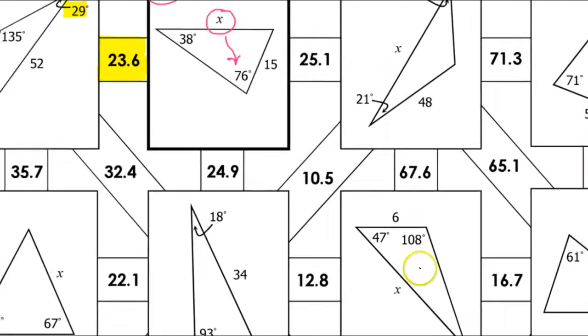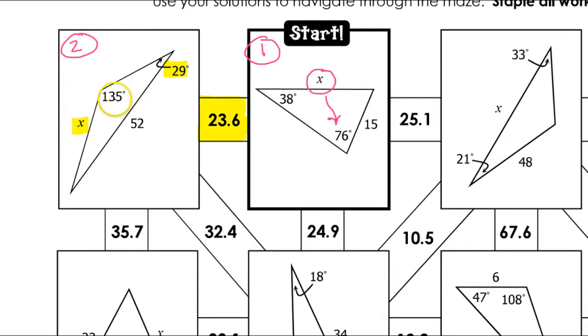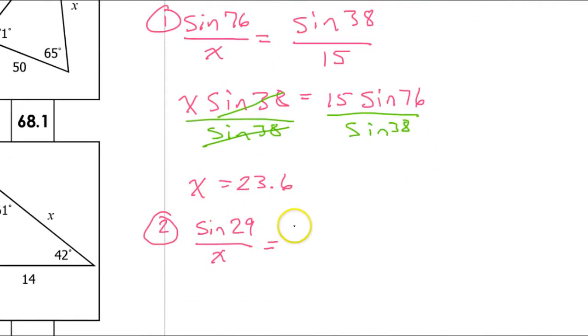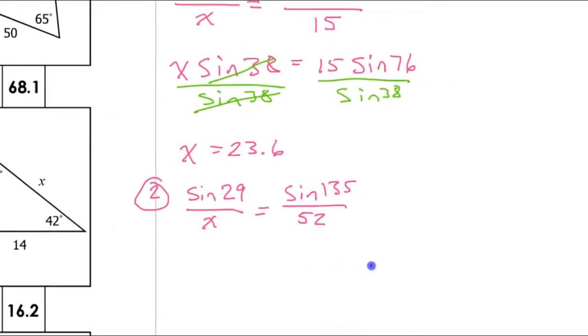Alright, now we'll look and see what else we have. So I have 135 degrees across from 52. So that's going to equal the sine of 135 degrees over 52. And once again, I will cross multiply in order to solve for x. So that's going to look like this.